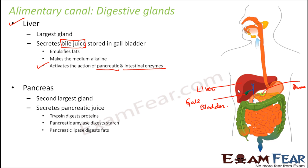The pancreas is the second largest gland and it secretes pancreatic juice. The pancreatic enzymes can digest all types of nutrients — carbohydrates, proteins, as well as fats. It contains trypsin, which helps in digestion of proteins; pancreatic amylase, which helps in digestion of starch; and pancreatic lipase, which helps in digestion of fats.